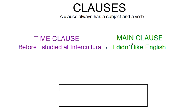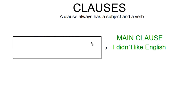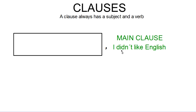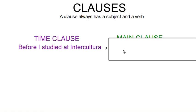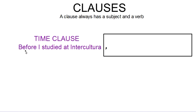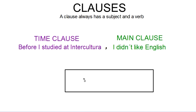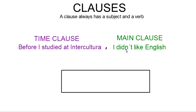I call this my main clause because if I cover up my time clause and I say 'I didn't like English,' that's a complete idea and it does not need any more information — that's why it's a main clause; it is independent. But if I cover my main clause and read 'before I studied at Intercultura,' I get the idea that I need something more. So my time clause is very dependent on my main clause.